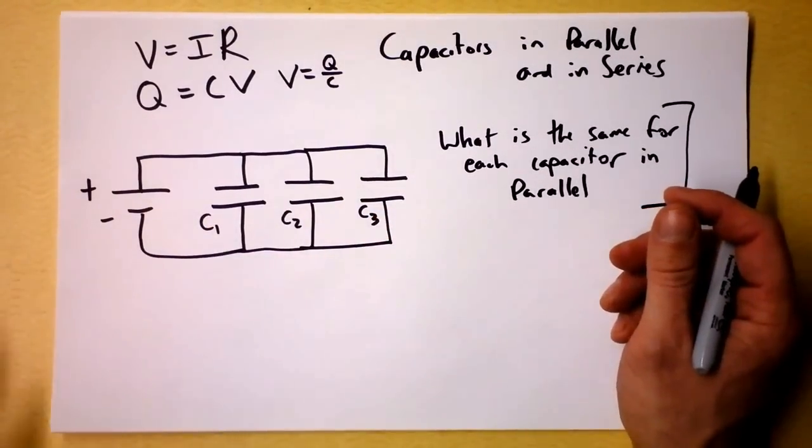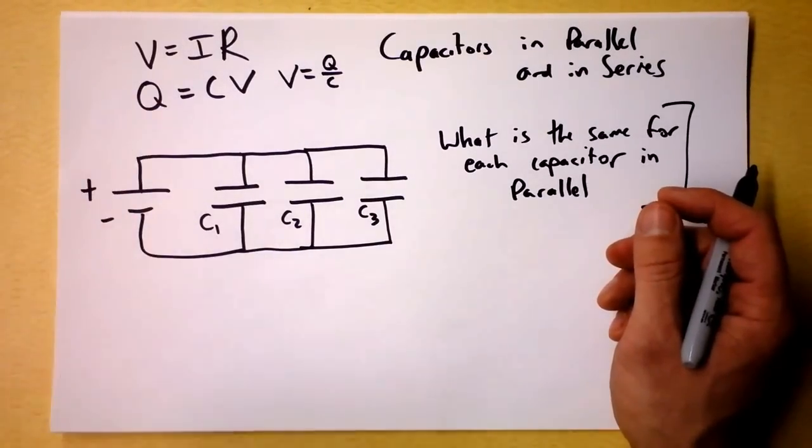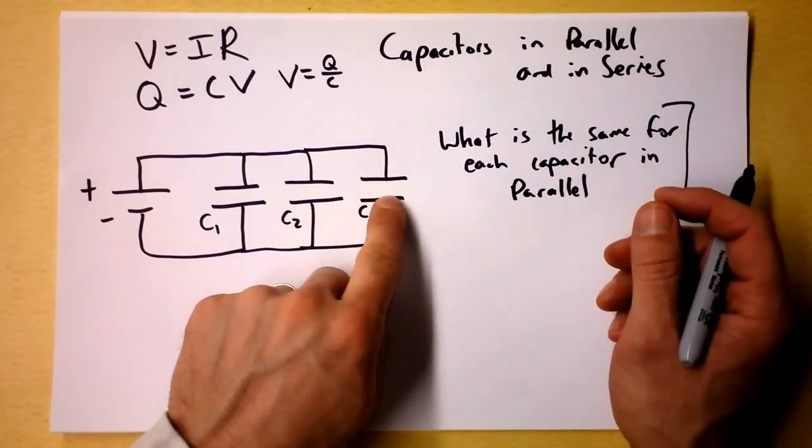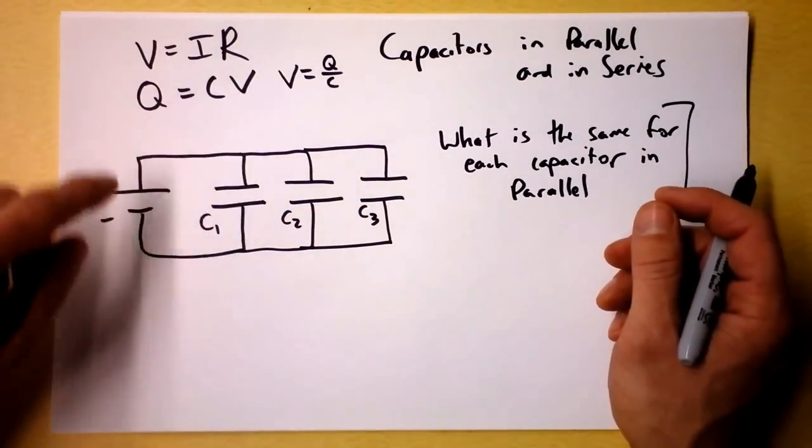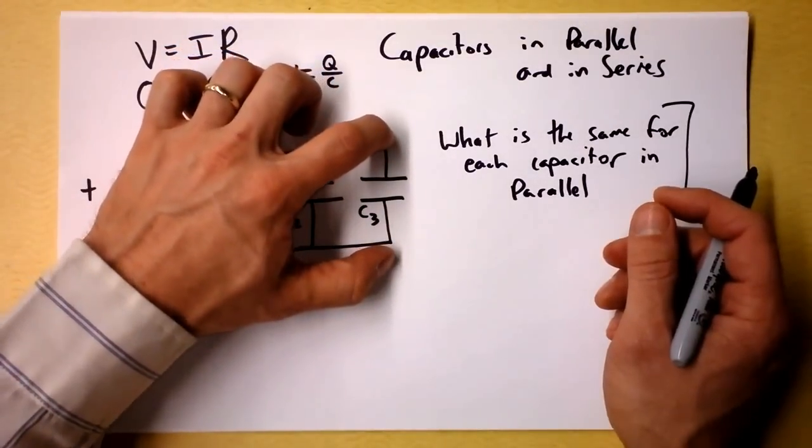Is it the capacitance? No. That's stupid, right? Is it the charge? I don't think there's any reason that these have to be holding the same charge. Is it the potential? Is the potential difference across this similar to the potential difference across that? Similar to the potential difference across that? Of course!